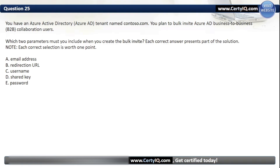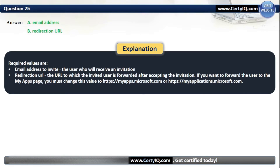Question 25. You have an Azure AD tenant named Contoso.com. You plan to bulk invite Azure AD Business-to-Business collaboration users. Which two parameters must you include when you create the bulk invite? Our options are: A. Email address; B. Redirection URL; C. Username; D. Shared key; or E. Password. The correct options are A and B: email address and redirection URL. Required values are the email address of the user who will receive an invitation, and the redirection URL — the URL to which the invited user is forwarded after accepting the invitation.